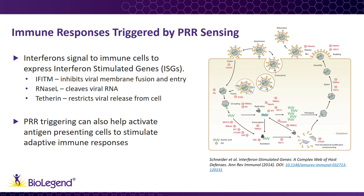A few examples of ISGs include IFITM, which inhibits viral membrane fusion and initial entry into the cell; ribonuclease L, which directly cleaves viral RNA; and tetherin, a transmembrane protein that tethers new virus particles to the cell membrane to stop their release.